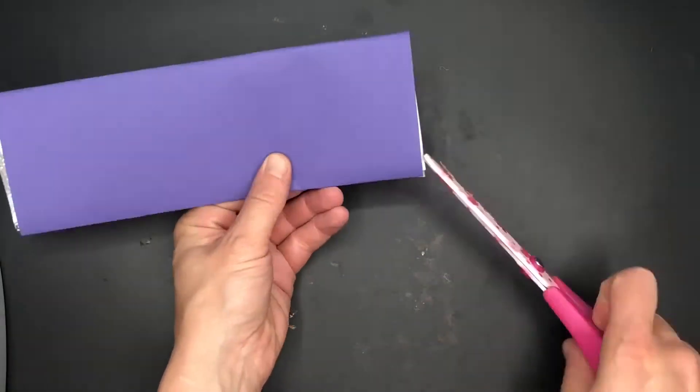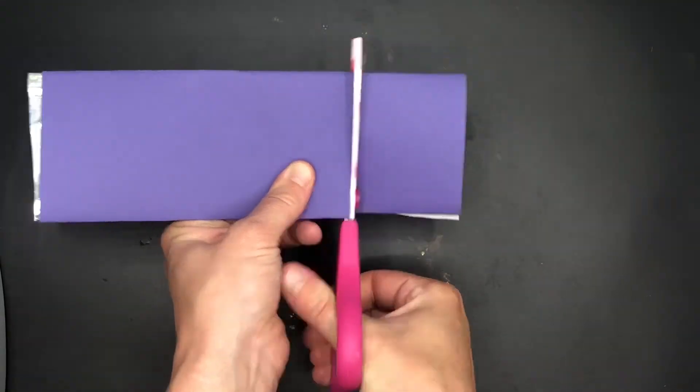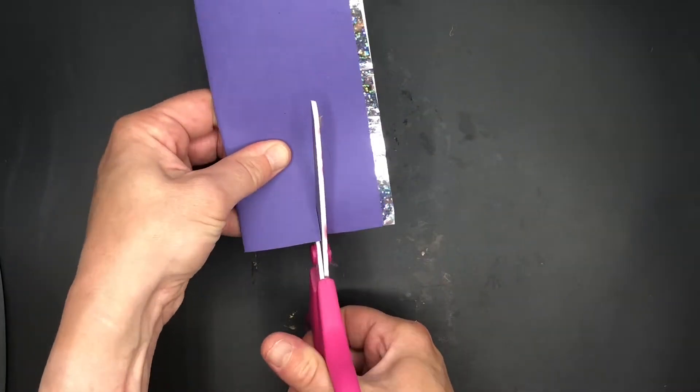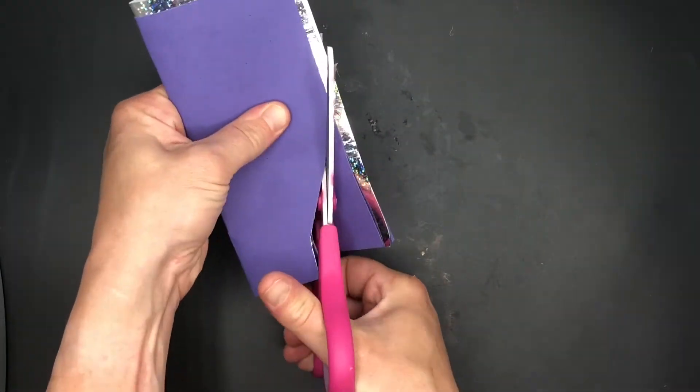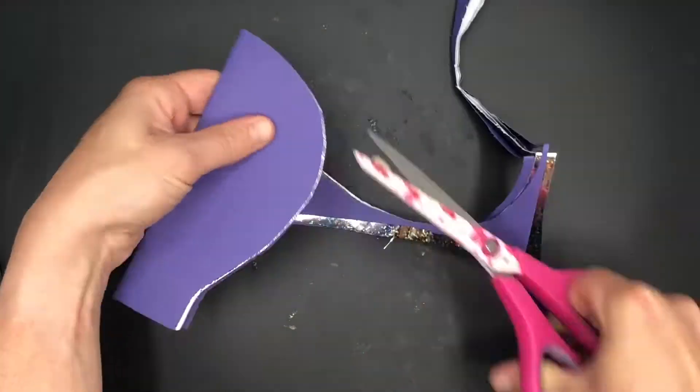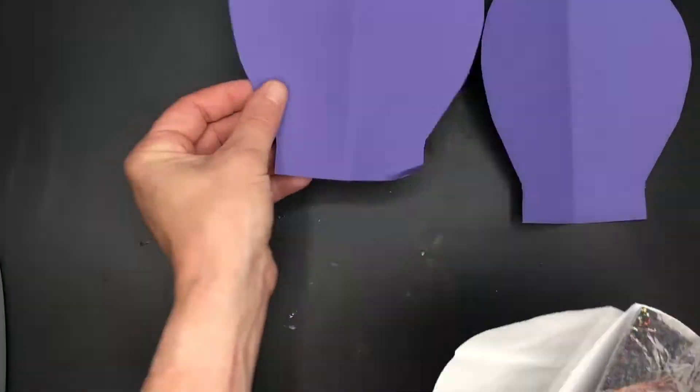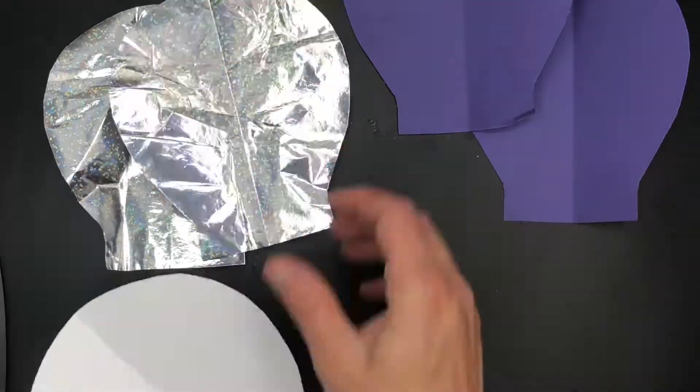I'm going to cut a strip off the bottom of my paper approximately three centimeters up from the bottom and then making sure that my folded edge is on one side I'm going to cut half a balloon shape. There is a template that you can download in the description for this.